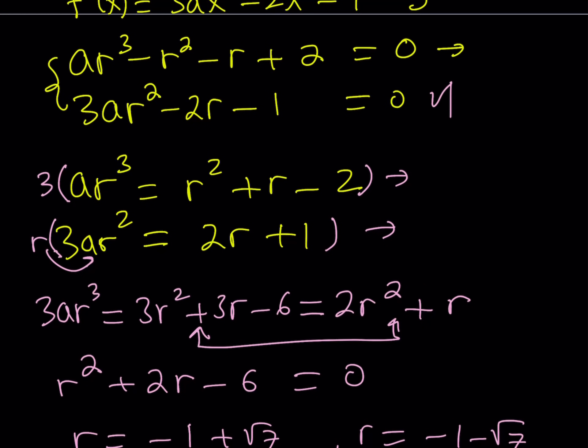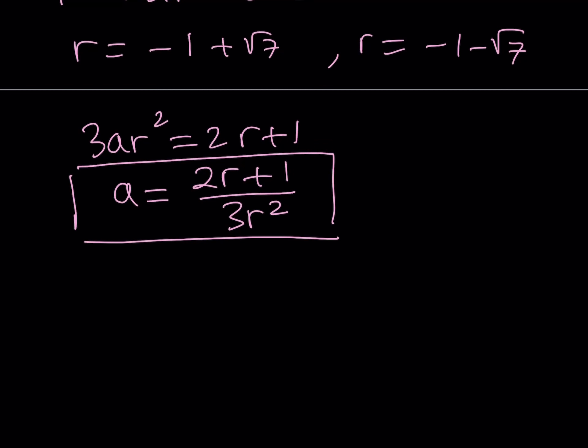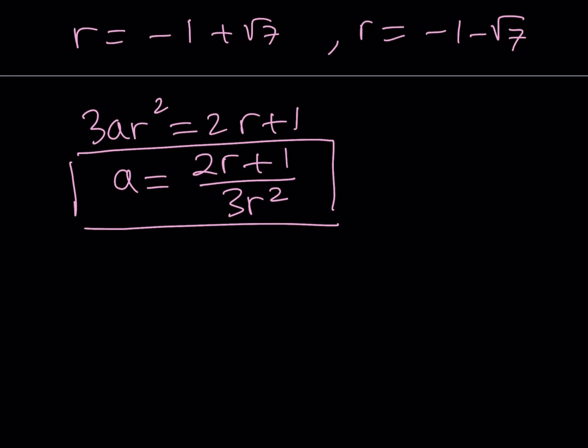So why don't we just go ahead and use that one. The second equation gave me 3ar² = 2r + 1. From here if I isolate a, I get a = (2r + 1)/(3r²). So I was able to write a in terms of r, and I know the values of r so I can just plug it in and find the values. Let me just find one and then I'll tell you the other one is going to be very similar.